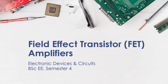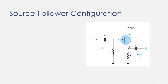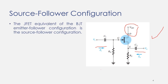In this lecture we are going to talk about our last configuration for field effect transistors. This configuration is called common drain configuration, also called source follower configuration. In this configuration, the input side is connected with the gate terminal and the output side is connected with the source terminal, while the drain terminal is not connected to the input or output side. Since the drain is not connected to input or output, it is considered the common terminal — that's why this is called common drain configuration.